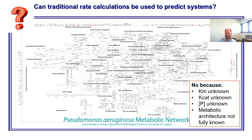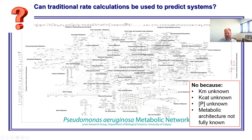We know the behavior of metabolic systems from Michaelis-Menten, but most of the required parameters aren't known. We know KCAT and KM for a handful of enzymes studied in the lab, but not exhaustively for every enzyme — and even where we do, those constants were measured under non-physiologically relevant conditions. We also don't know the concentrations of all metabolites in these networks, and we don't even have the full metabolic architecture fully laid out. So it's just not possible to use enzymology approaches to understand the metabolic activity of an entire network.